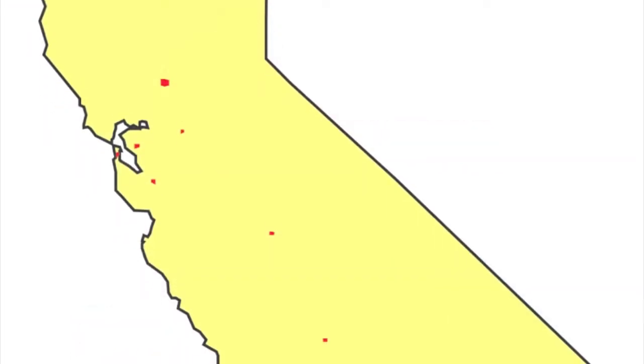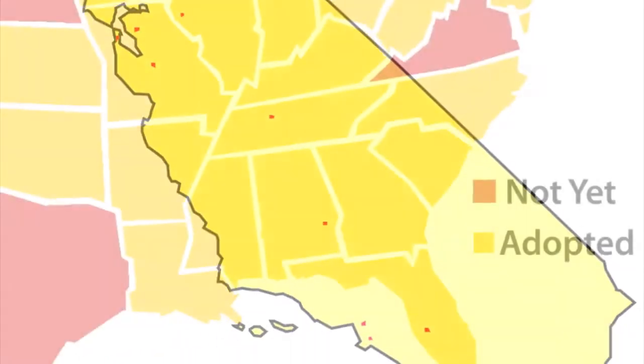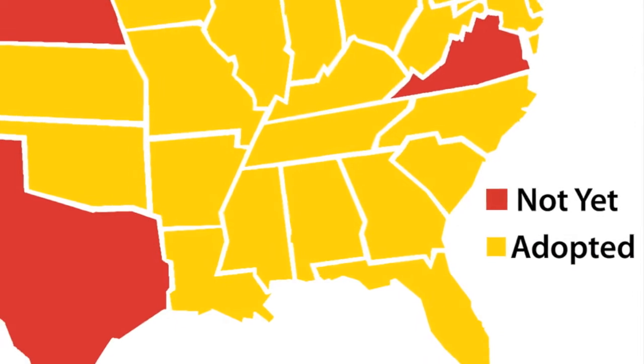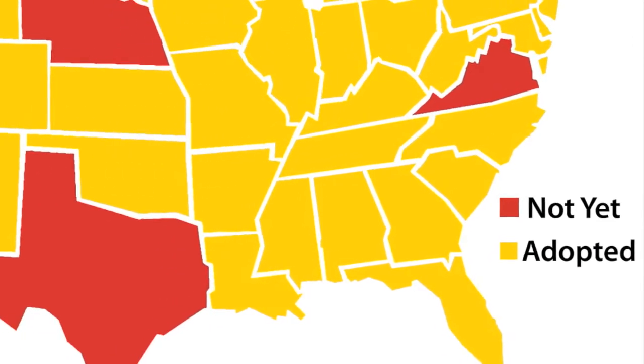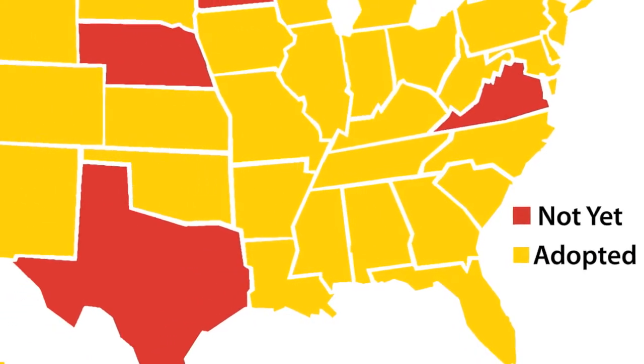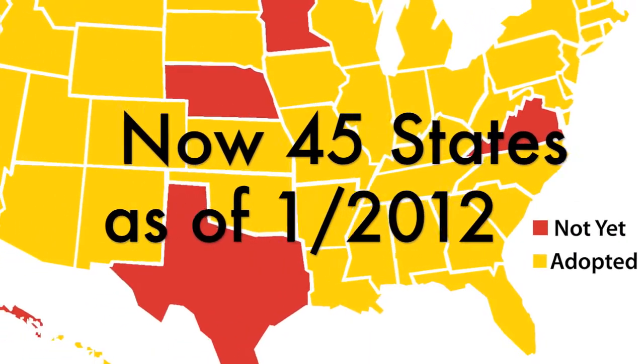California was one of the 48 states that participated in this effort. As of August 2010, the Common Core State Standards have been adopted by 44 states including California.